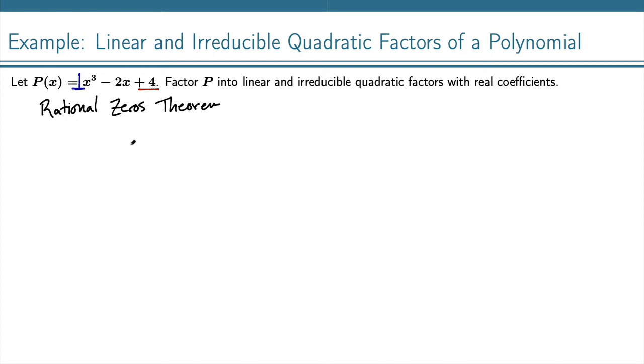Well that's just going to be the factors of 4, the integer factors, and so that is 1, 2, and 4, and it could be plus or minus any of those. And of course if you divide those by 1 or negative 1 we get the same numbers.